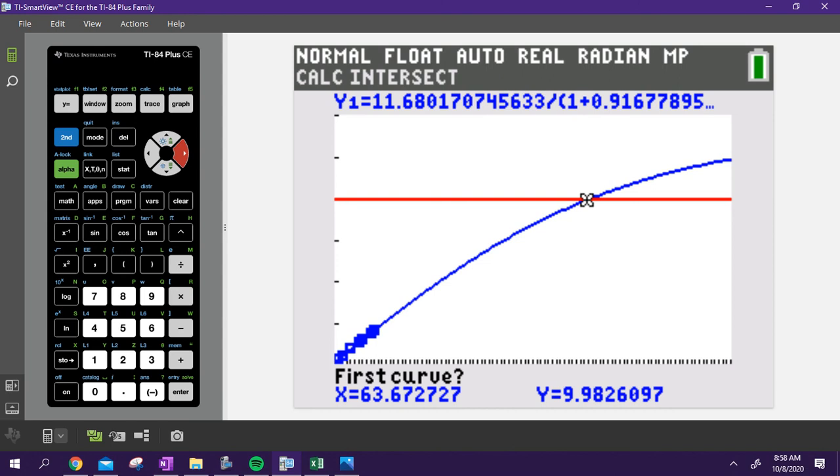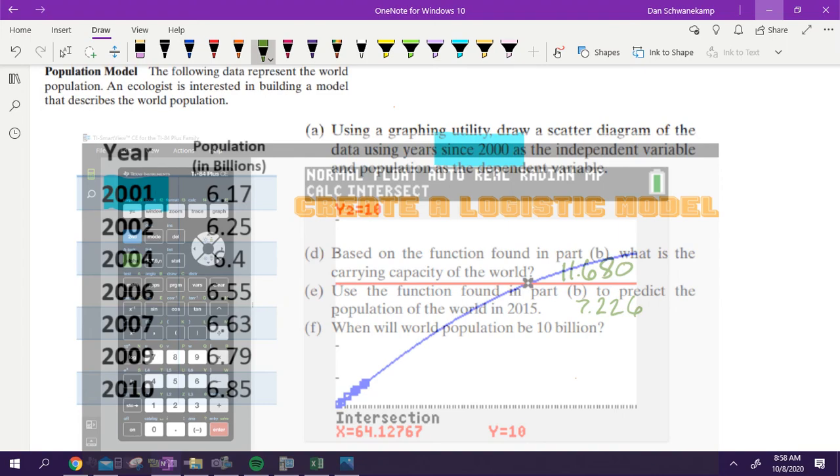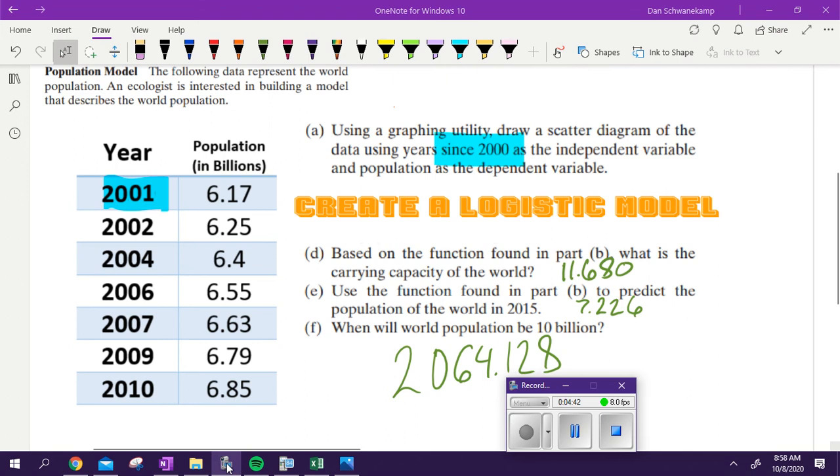Look to see where they cross. First curve, second curve, guess. 64.128. What does that mean? 2064. That's the year that the population is going to be 10 billion people. Questions with something there?